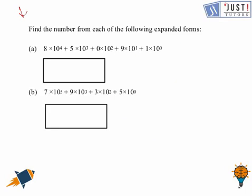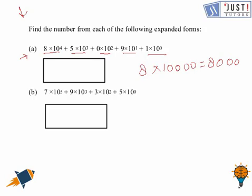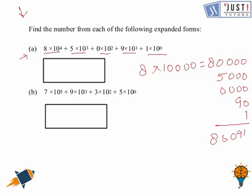Now here are some more questions where you need to find the value in expanded form. For the first one: 8 times ten thousand is eighty thousand; 5 times one thousand is five thousand; next is zero; 9 times ten is ninety; 1 times ten raised to the power zero is one. Adding them up, the answer is 85091. For the next one, there is no digit for ten raised to the power four so we put zero, giving 9 and 3, and no digit for ten to the power one so it is zero again, giving the final answer of 93005.